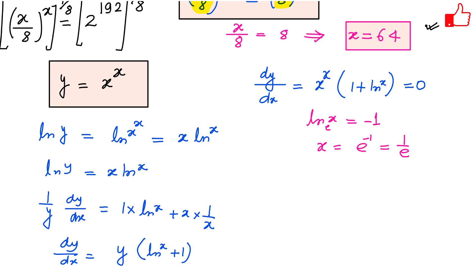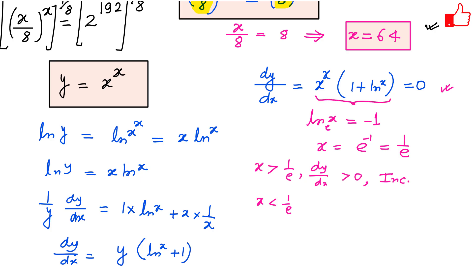So this function has a critical point at x equals 1 over e, which is either a minimum or maximum. If x is greater than 1 over e, dy over dx is positive, so the function is increasing in this region. If x is less than 1 over e, dy over dx is negative, so the function is decreasing in this region. Therefore x equals 1 over e is a minimum.